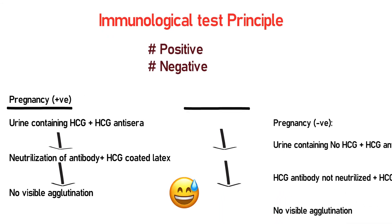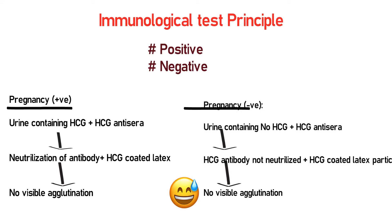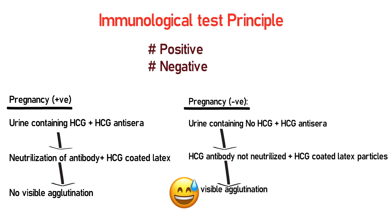Condition two — negative result: when urine containing no HCG is mixed with HCG anti-sera, the HCG antibody is not neutralized, and it reacts with the HCG-coated latex particles, resulting in visible agglutination. The result shows negative.